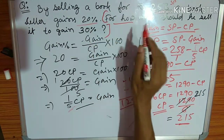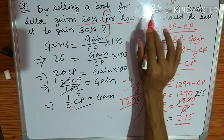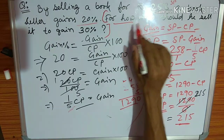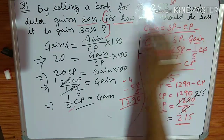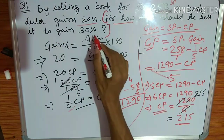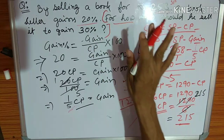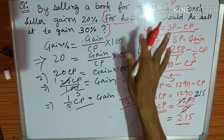So, how much should he sell it to gain 30 percent? 30 percent is the target profit. How much is it profitable at 30 percent?